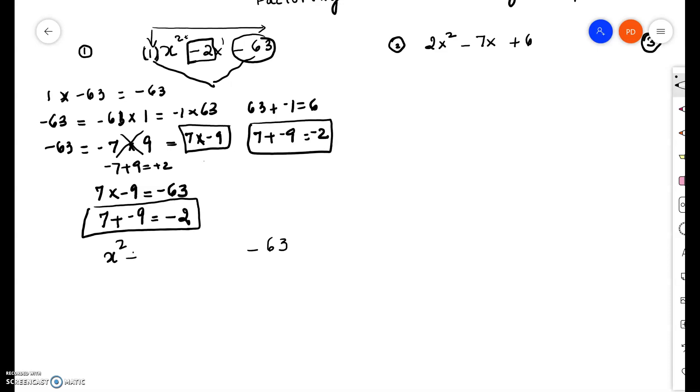So if I go plus 7x minus 9x, do you see where I am getting these numbers from? The 7 comes from 7 and the negative 9 comes from the factors of, come from the factors of negative 63 and they add up to negative 2.